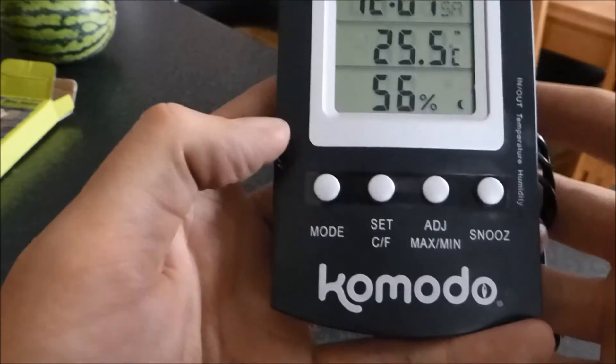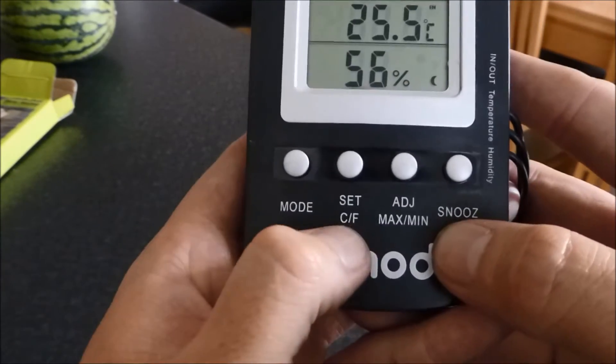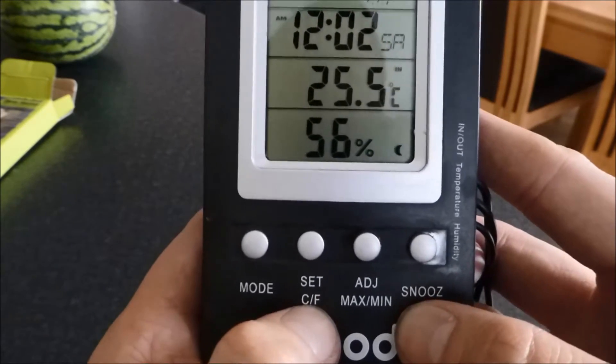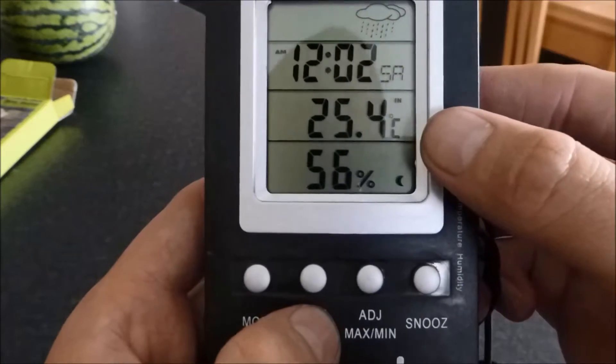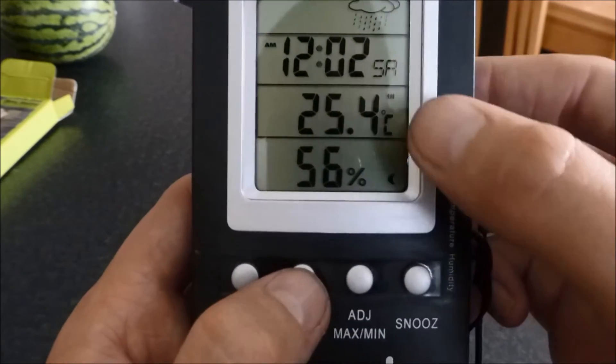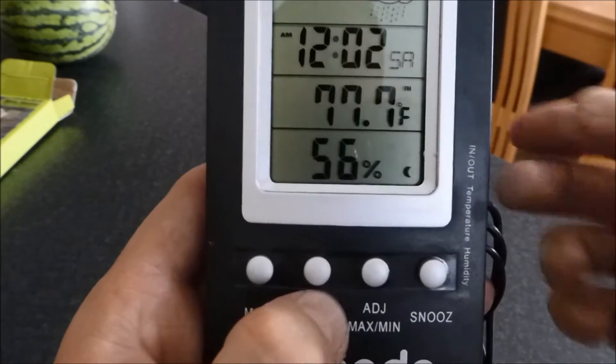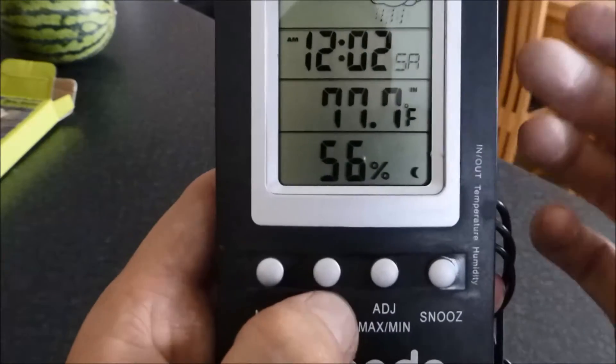So first off, you've got your four buttons. You've got mode, set, and this also changes between Celsius and Fahrenheit. Now it's on degrees Celsius, which is 25.4. If I press that button once, you'll see that it changes to Fahrenheit, which is what I'll be using. So just for the video's sake, I'll leave it on Fahrenheit.